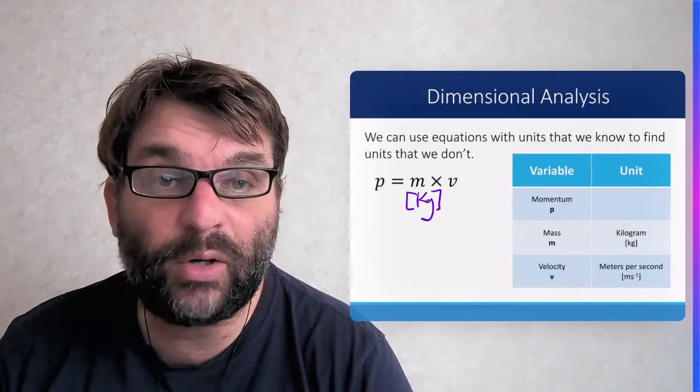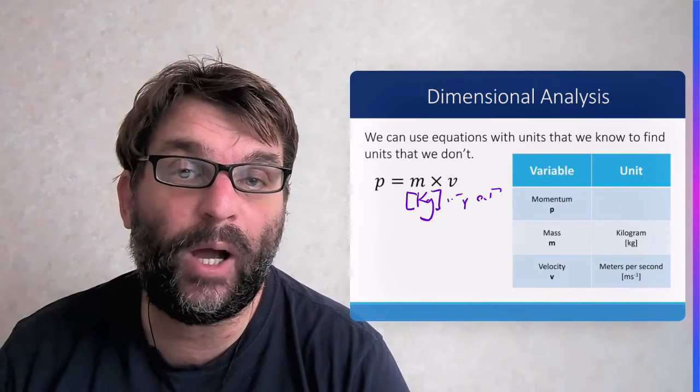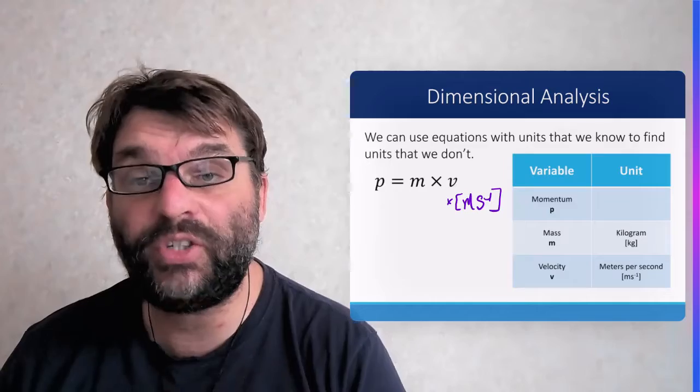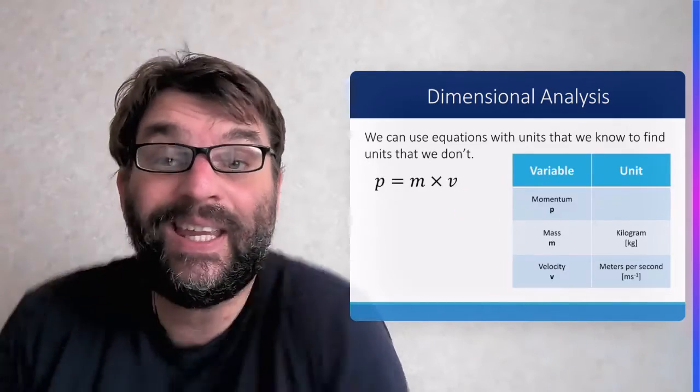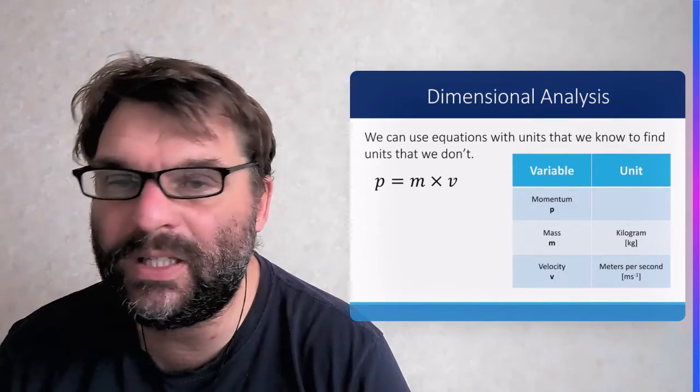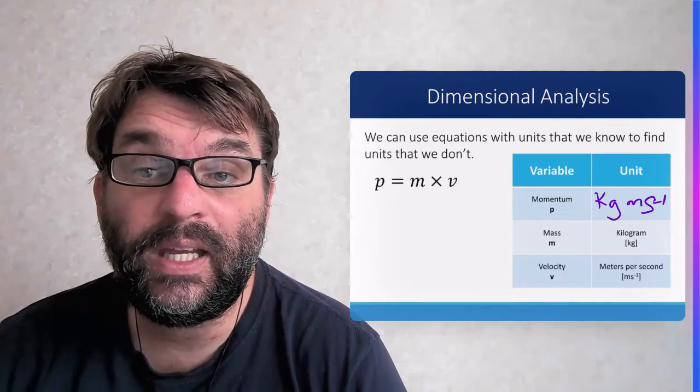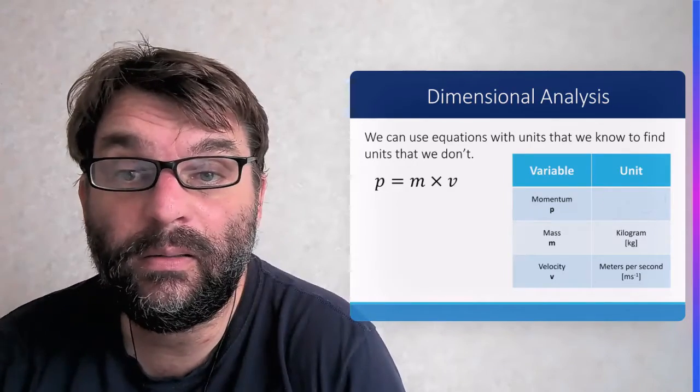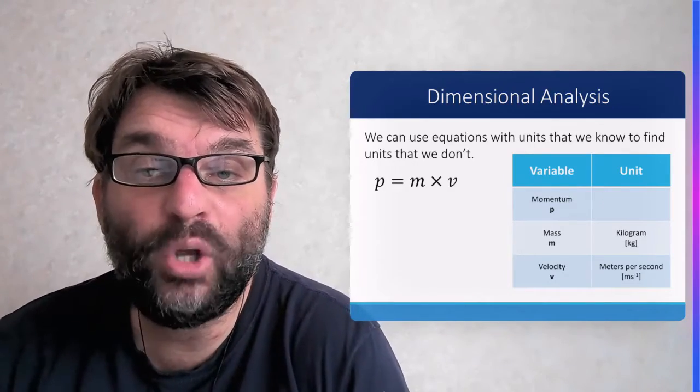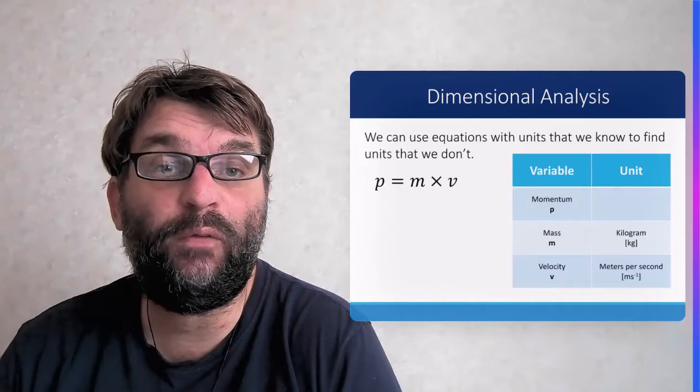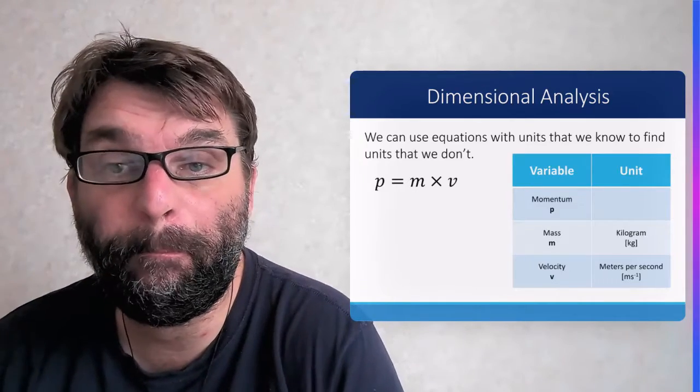Okay, so for momentum, we know that the unit for mass is kilograms, and if we multiply it by the units for velocity, which is meters per second, we can get the units for momentum, which are simply kilograms times meters per second. That's the units for momentum.